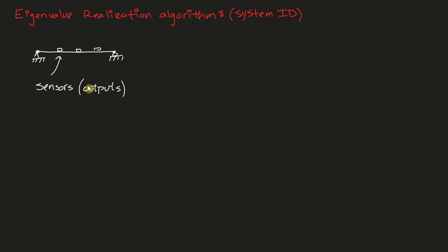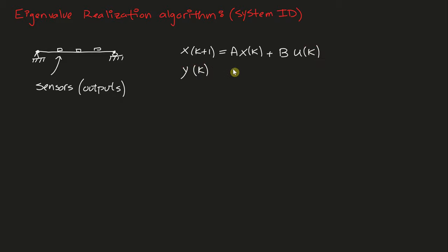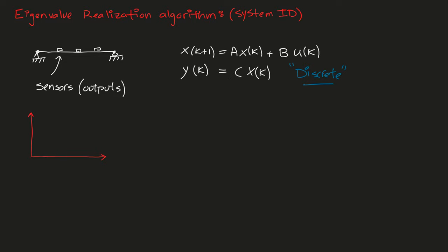So here we have a number of sensors and these are our outputs. We're going to take the state space system that we discussed in the previous lectures and this time we're going to express it in discrete time — that's where we're seeing the k's in the brackets. This is a linear time-invariant system. My interest in this lecture is free response and impact testing, and when you're thinking about input forces and impact testing, the thing that should come to mind is impulse loading.